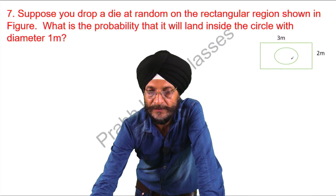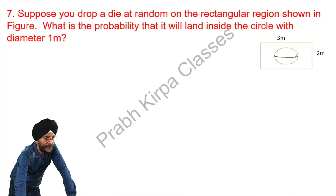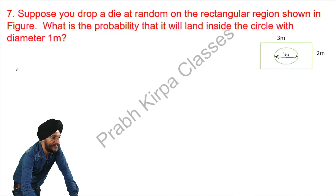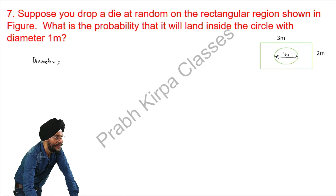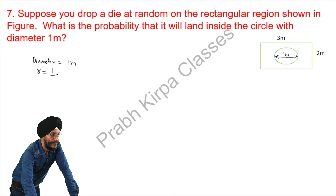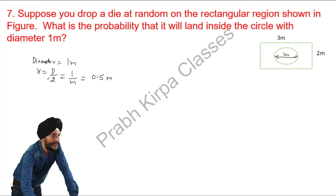The distance from one side to the other is known as the diameter, which is 1 meter. So, what is given: the diameter of the circle is 1 meter. You know that the radius is half of the diameter. So the radius equals diameter divided by 2, which is 1 over 2 meter, that is 0.5 meter.